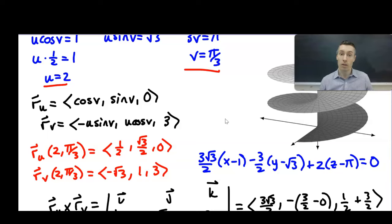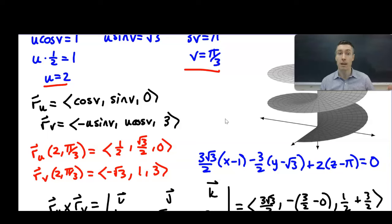There are a lot of new elements in this video. We've never really parameterized a surface before, so we talked about a couple of techniques to do that. We ended with the tangent plane example to introduce the cross product of the two tangent vectors r_u and r_v, because that's going to appear quite often in coming videos. Practice with all this, get comfortable, and I'll see you in the next video.